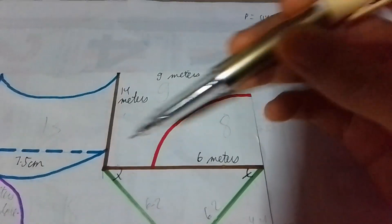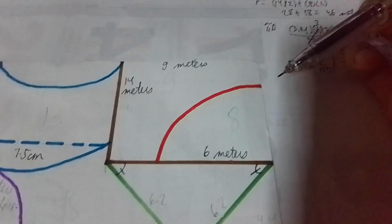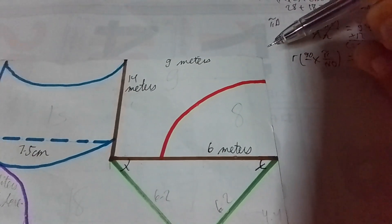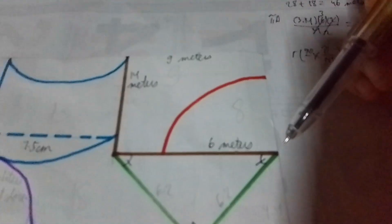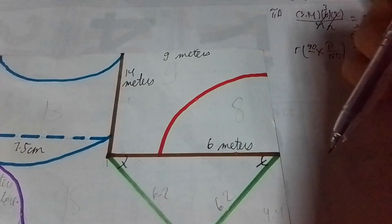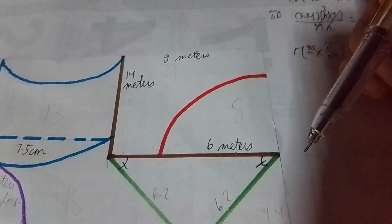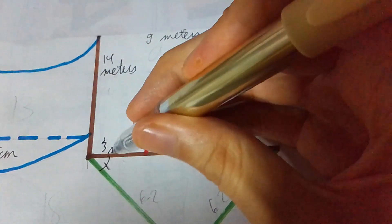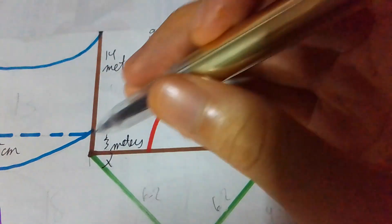We need to get the measure of these two. Remember, this is 9 meters. If this measures 9 meters, and the radii measures 6 meters, subtract. Therefore, this should become 3 meters.